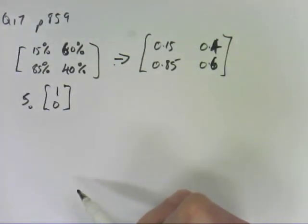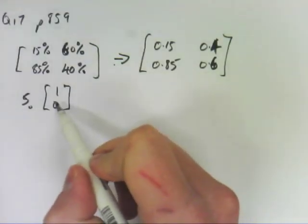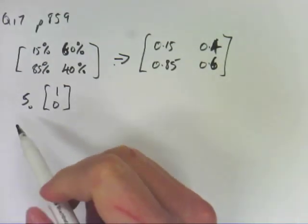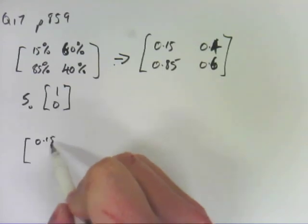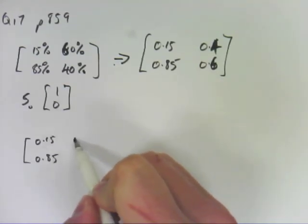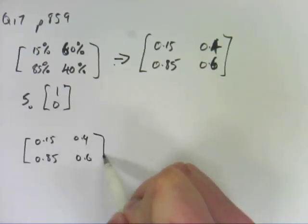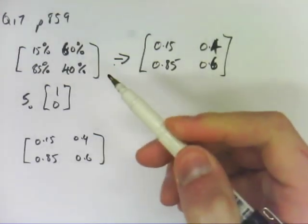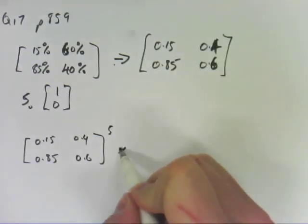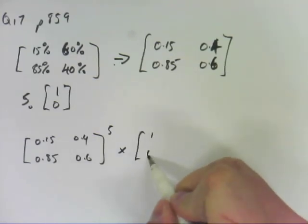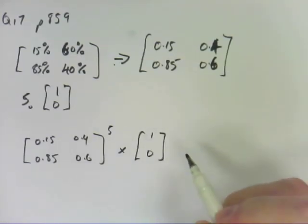So there's my S0, and we need to find the probability that the train will be on time the following Monday. So we'll be looking at the bottom one, but the following Friday, sorry. So we've got our transition matrix to the power of Monday, Tuesday, Wednesday, Thursday, Friday, so 5 days, multiplied by our starting matrix.